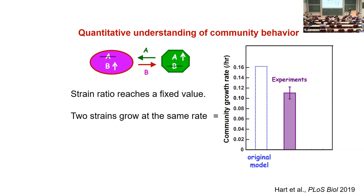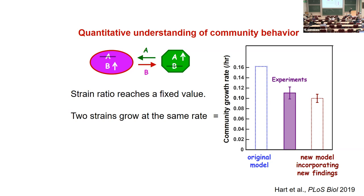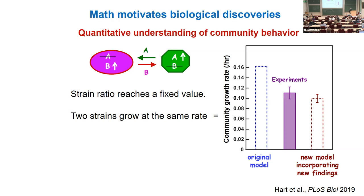So that got us thinking — what are we missing? When we found out what was missing and incorporated those findings, we now have quantitative agreement between experiments and modeling. So math motivates biological discoveries.